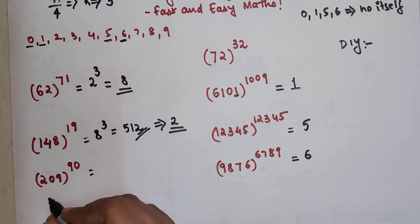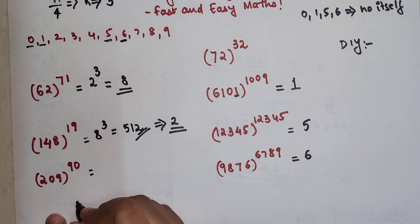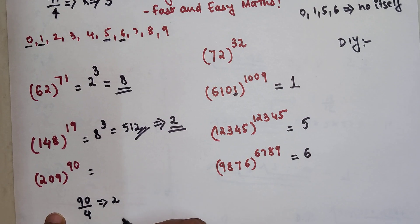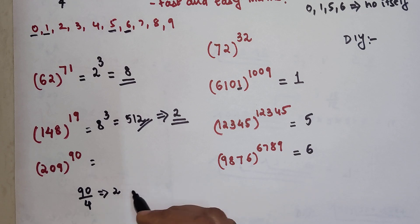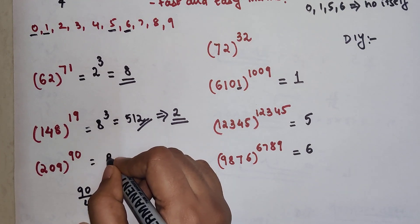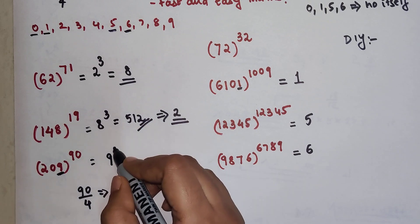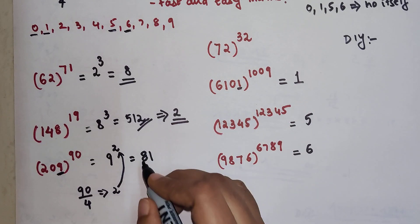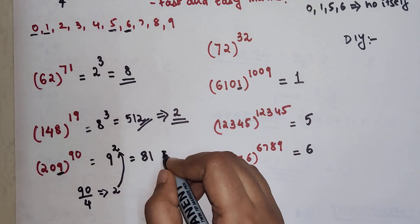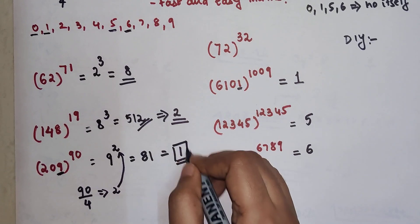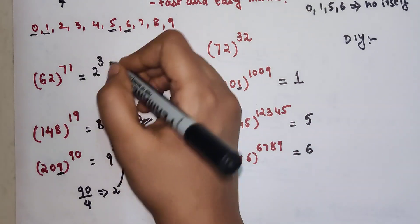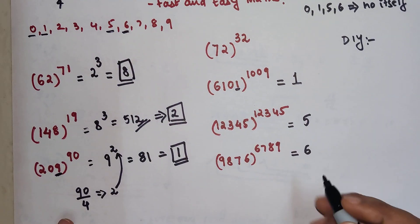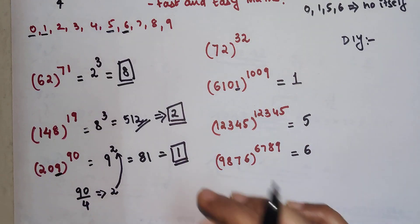Very quickly, we have 209 raised to 90. Let's divide 90 by 4. You're left with a remainder of 2, because 4 times 22 gets you 88, and when you take 88 away from 90, you get 2. Now we take the last digit, 9, raised to 2—this is my remainder. 9 raised to 2 is 81, so the last digit will be 1. My final answer will be 1 for this one.